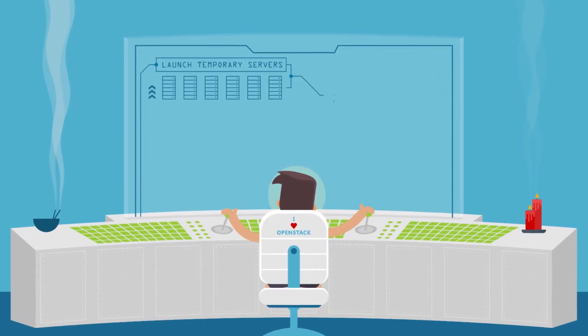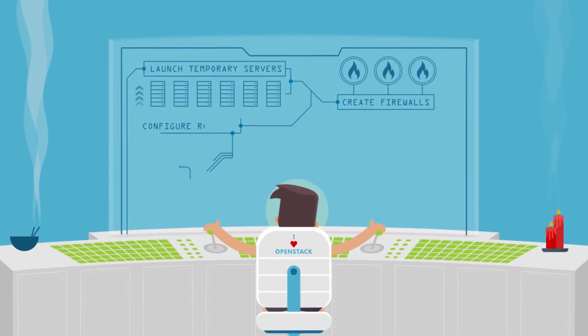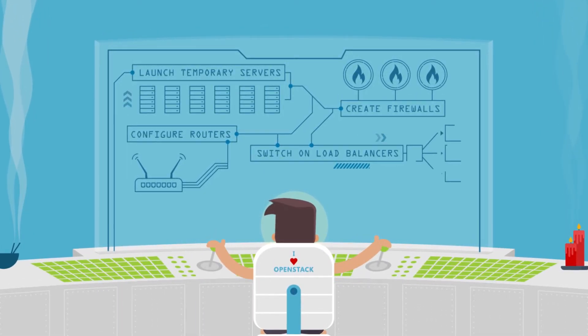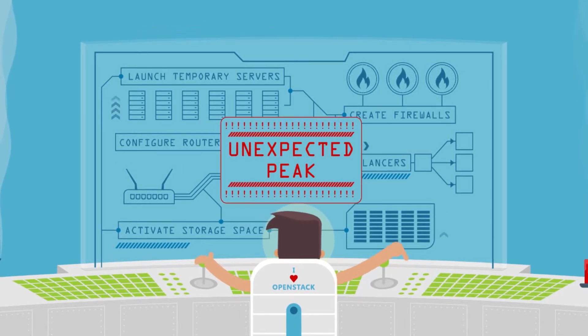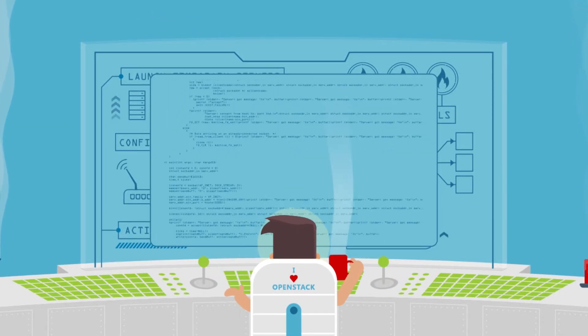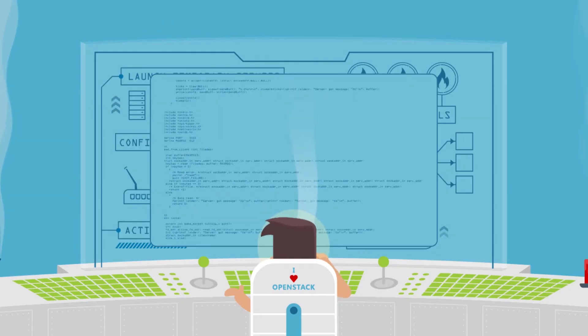you can launch temporary servers, create firewalls, configure routers, switch on load balancers, activate storage space, and use templates to respond to every unexpected peak at lightning speed and in a scalable way, even far in advance.